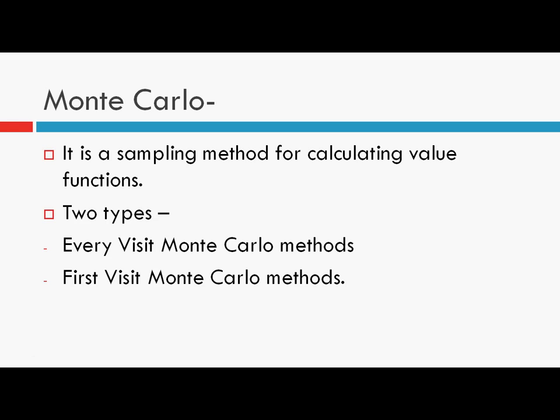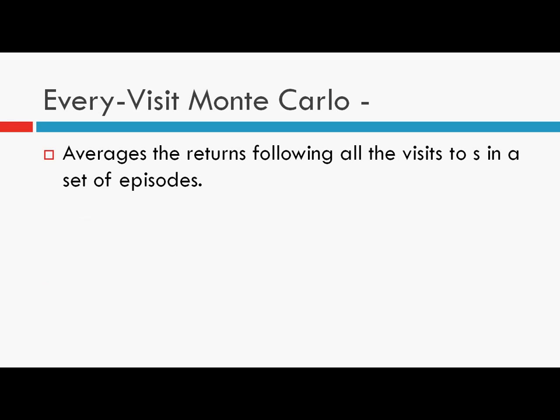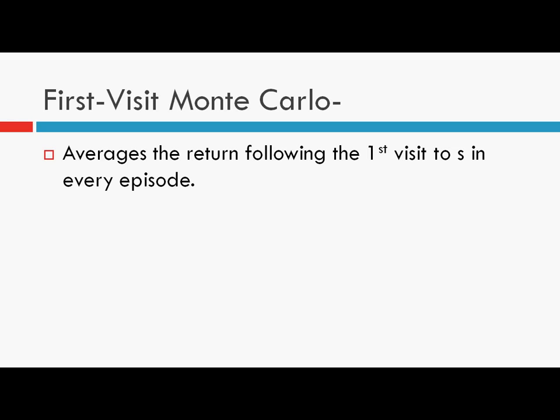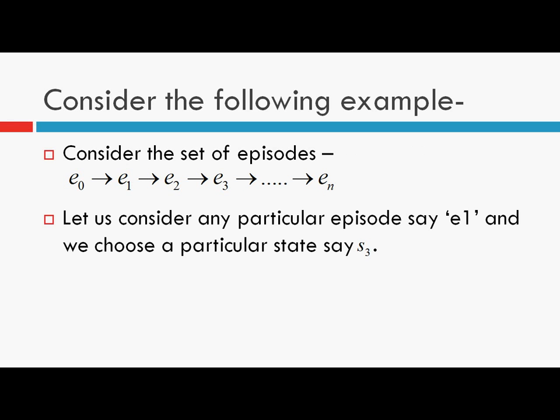There are basically two types of Monte Carlo methods. The first is Every-Visit Monte Carlo, which averages the returns following all visits to a state across a set of episodes. The second is First-Visit Monte Carlo, which averages the return following only the first visit to state S in each episode, doing this for all episodes. Consider a set of N+1 episodes E0 to EN; for any particular episode, say E1, and any particular state, say S3.